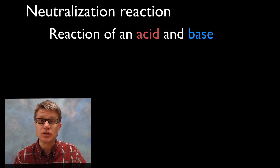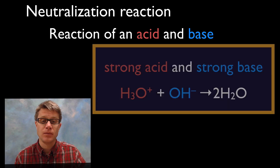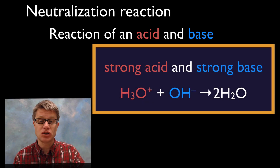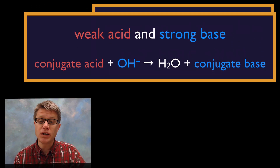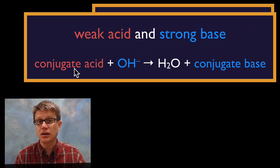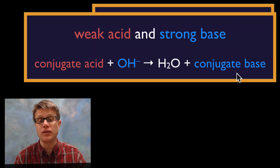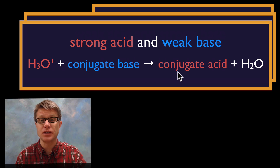A neutralization reaction occurs between an acid and a base. There are three groups: a strong acid and a strong base — where they form water; a weak acid and a strong base — where the conjugate acid forms a conjugate base, but not all at once; and a strong acid and a weak base — where the weak base forms a conjugate acid, and not all of the protons transfer.